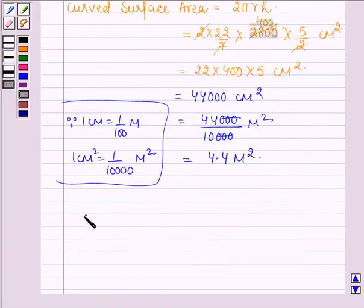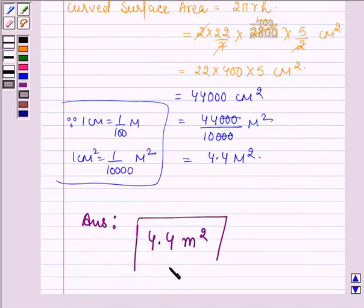And hence, our answer is: the total radiating surface in the system is 4.4 meters square. This completes the session, bye and take care.